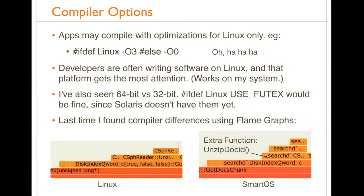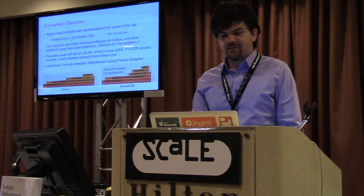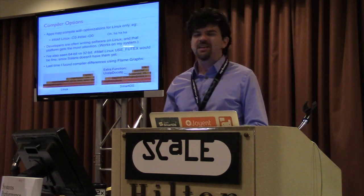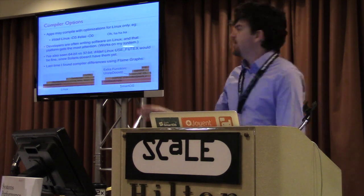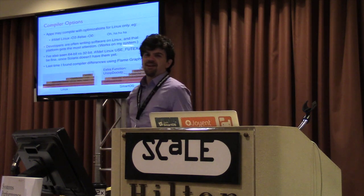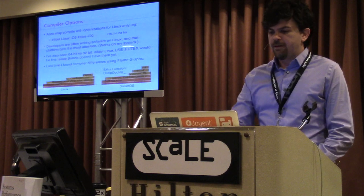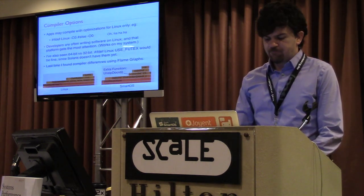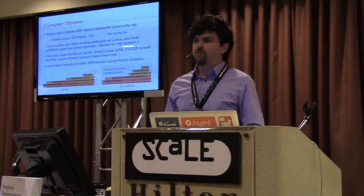Another thing Solaris can learn from Linux is compiler options. Developers are increasingly writing software on Linux and that platform gets the most attention — 'it works on my system.' I've seen things like 'if def Linux, use optimizations; else the rest of the world can just suck on it.' That isn't necessary because operating systems like SmartOS can use GCC just fine with optimizations. Also, 32-bit versus 64-bit builds and compiler optimizations are extremely hard to debug.